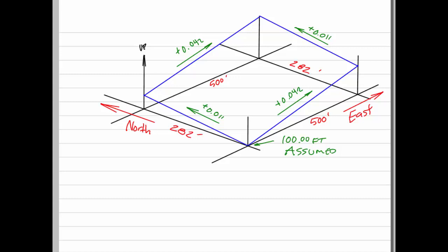We're just going to calculate the four corner elevations, starting from an assumed elevation of 100 feet at the southwest corner of the slab. The slopes, as given, are 0.011 in decimal form in the north-south direction and 0.042 in the east-west direction.